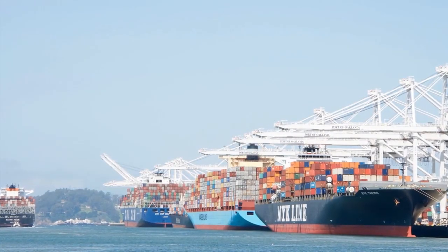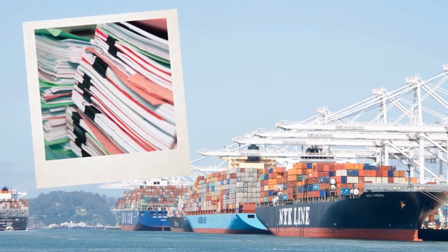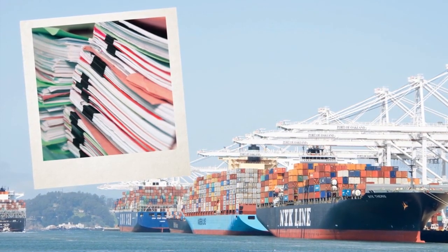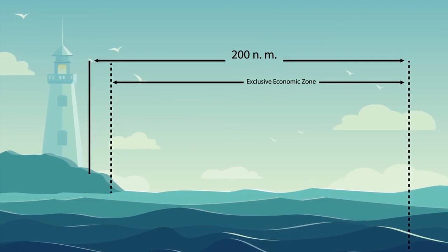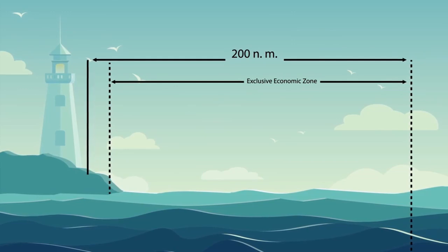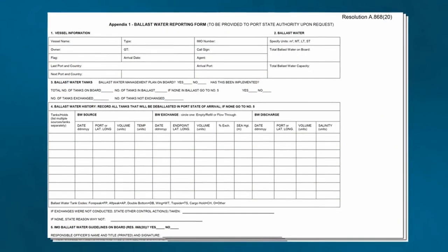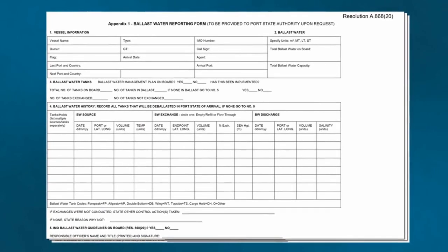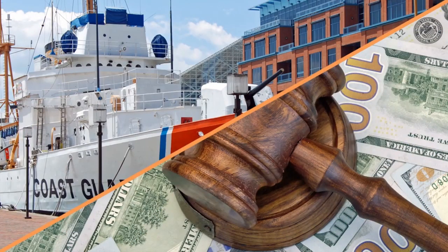Most port states require numerous reports to be submitted in advance of an arrival in their territorial waters or even in the exclusive economic zone — these borders are depicted in the nautical chart. This includes reports on ballast water management activities. IMO has developed a standard reporting form, but national rules also exist. Check with the port state what their rules are. Note that the USCG has issued rules with penalty provisions if a report is not submitted.